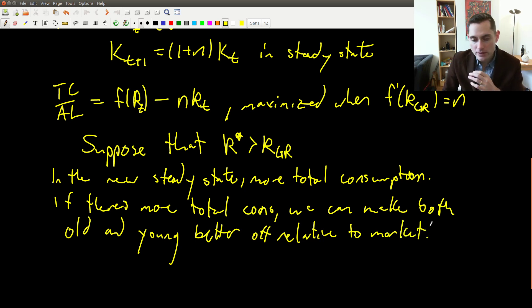So that's the way it works in the very first period. So at time t, we're going to force the young to save less than they otherwise would have. So they're going to consume more. And then in the next period, and every period after that, we have more total consumption. And we can split that up in such a way where the plan is so that everyone is made better off. That's the idea.